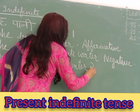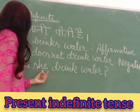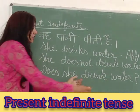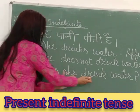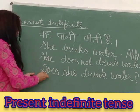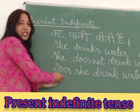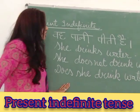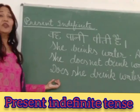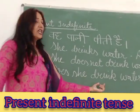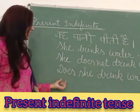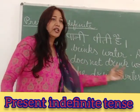We don't write 'drinks' here because we are already using 'does.' 'Do' has 's' added and becomes 'does,' so we do not write 'drinks.' Whenever 'does' is used, we write the first form of the verb. So: Does she drink water?